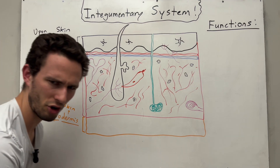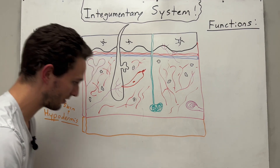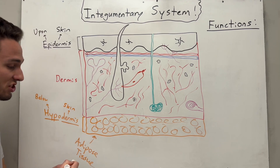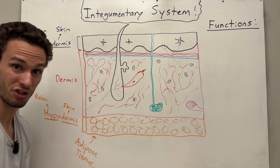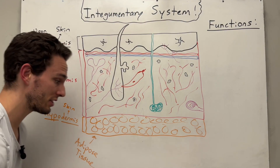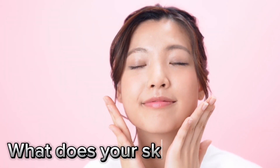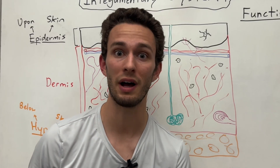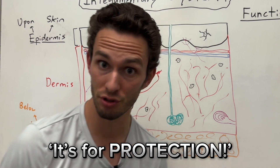The hypodermis is actually just a layer of subcutaneous fat, otherwise known as adipose tissue, and that is going to connect the skin to other underlying structures, things like bones and muscles. So those are the layers, but think about what your skin does for you. Most of my students usually respond it's for protection, and that's absolutely true.